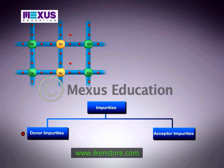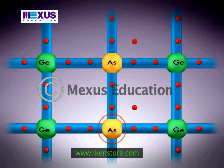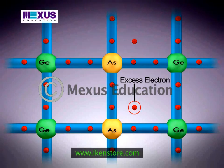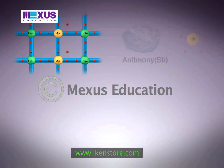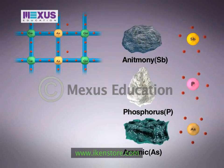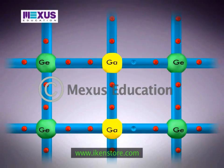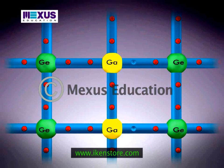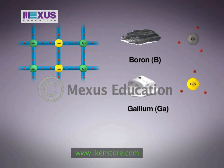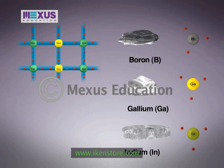Impurities are classified into donor impurities and acceptor impurities. Donor impurities are those elements which donate excess electrons for conduction. Pentavalent elements like antimony, phosphorous, and arsenic are donor impurities. Acceptor impurities are those elements which create positive carriers or holes that can accept electrons. Trivalent elements like boron, gallium, or indium are acceptor impurities.